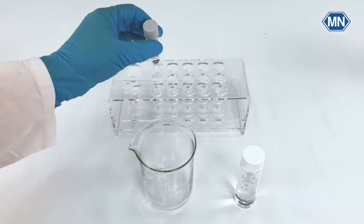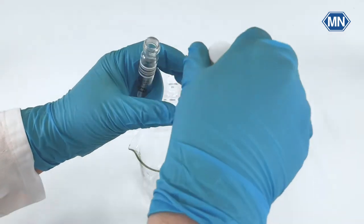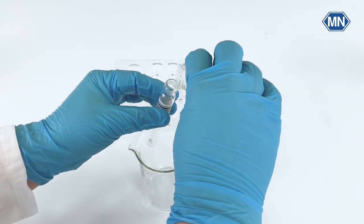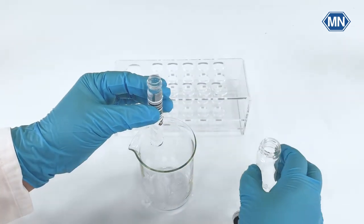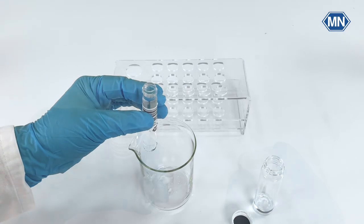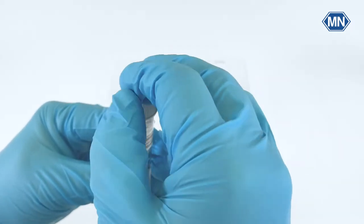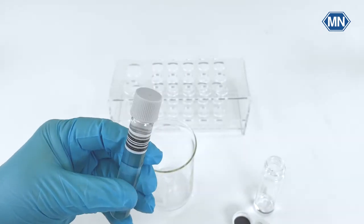Take a test tube, open it and fill it to the brim with the diluted water sample without letting air bubbles in. Close the test tube without letting air bubbles in. After this mark it as the sample tube.